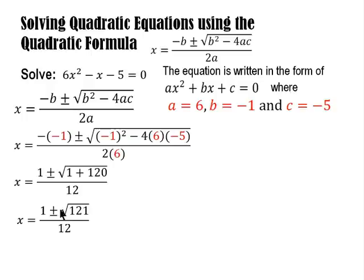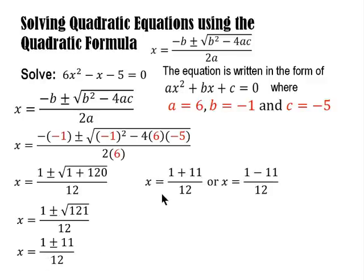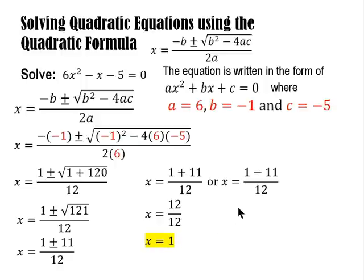Simplifying further: 1 plus or minus the square root of 1 plus 120, which is 121, over 12. So x equals 1 plus or minus 11 — because the square root of 121 is 11 — all over 12. We have two solutions: x = (1 + 11)/12 or x = (1 - 11)/12. The first gives x = 12/12 = 1. The second gives x = -10/12, which reduces to x = -5/6.